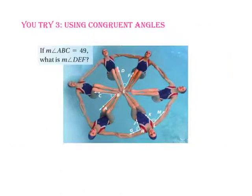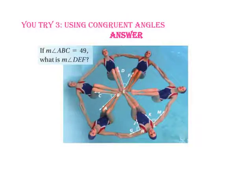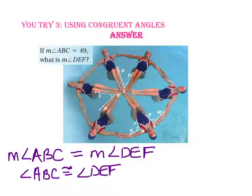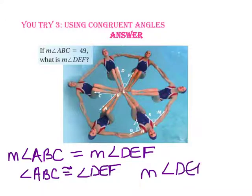Pause the video and do you try number 3. Let's check your answer. If the measure of angle ABC is 49, what is the measure of angle DEF? Notice each angle has one arc, which means the measure of angle ABC equals the measure of angle DEF — the angles are congruent. Therefore, the measure of angle DEF is also 49.